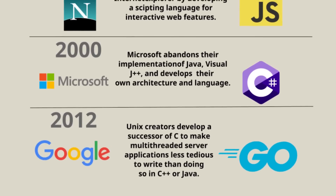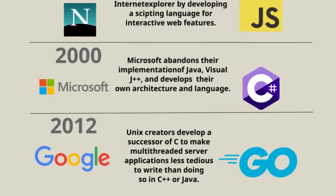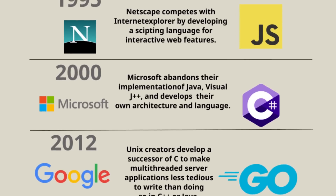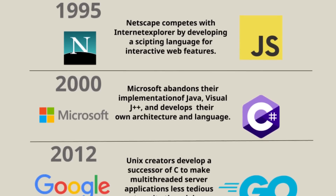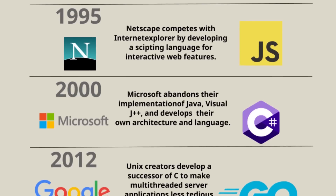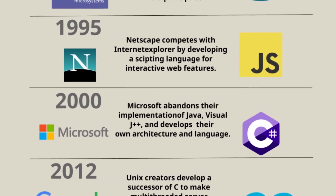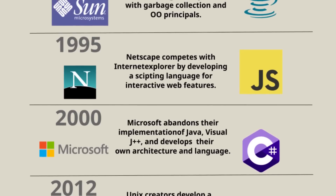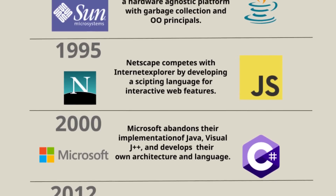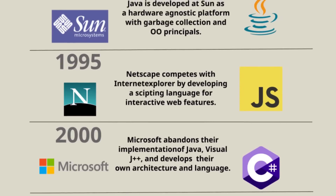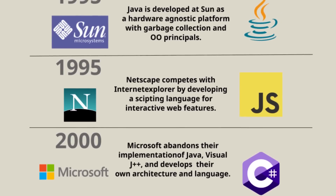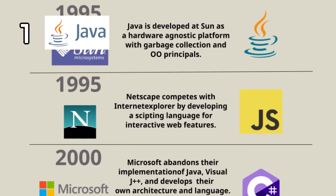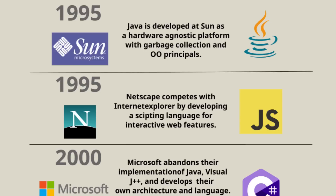To understand the many programming languages you can choose to learn and create software with, it's important to understand — in addition to the technical details — the historical context and reason the language was created. Often they provide a solution to a series of problems encountered in previous languages, which we'll have several examples of, starting with the creation of Java, which arose because of problems with C and C++.